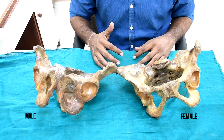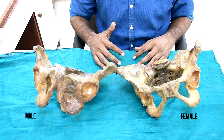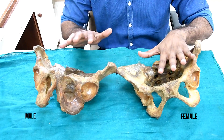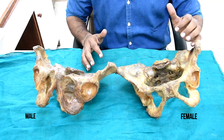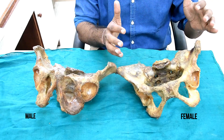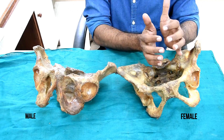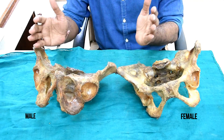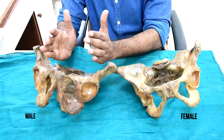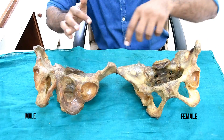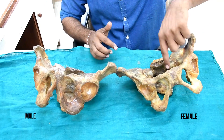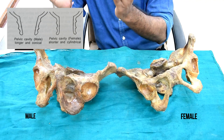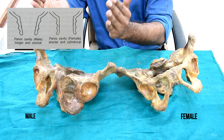Now we will see the differentiating points of the male and the female pelvis. On my right side there is a male pelvis and on my left side there is a female pelvis. The overall shape and size of the female pelvis is wider and shallower, whereas the male pelvis is narrower and lower. The shape of the female pelvis is cylindrical, whereas the male pelvis is a short cone shape.